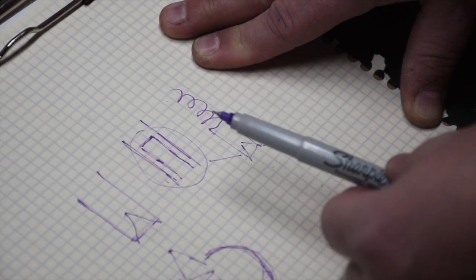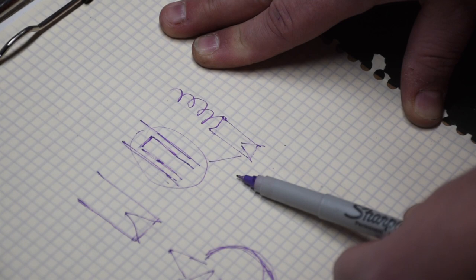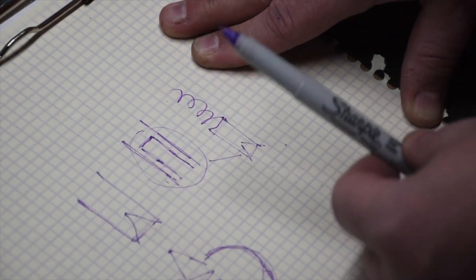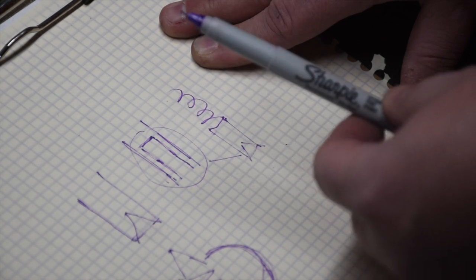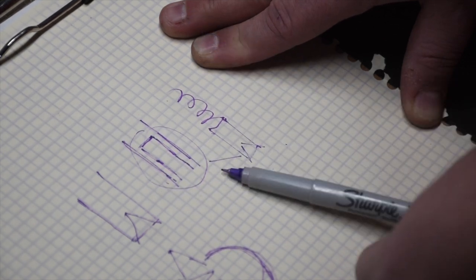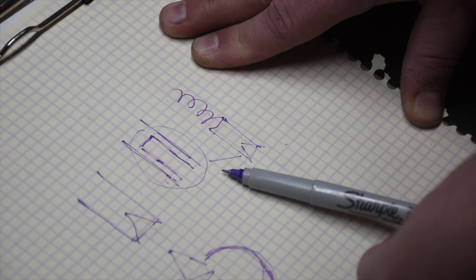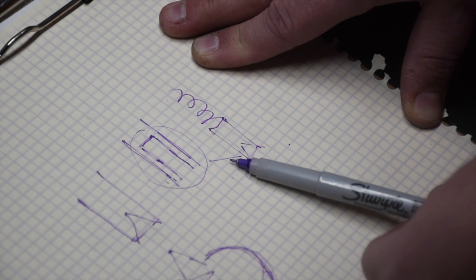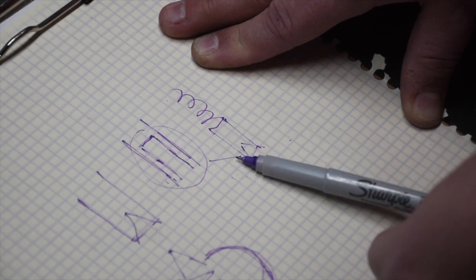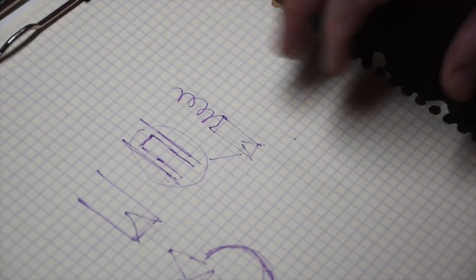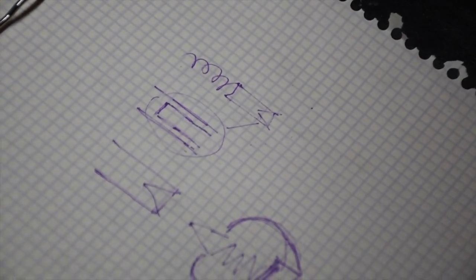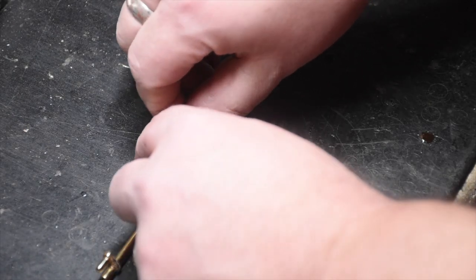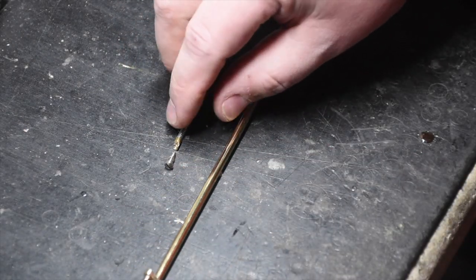No other major manufacturer of quality saxophones uses this crap. You don't see this on Yanagisawas, you don't see it on Yamahas, you don't see it on Keilwerths, you don't see it on Buffets. And it's not because it's patented and it's not because it's a super secret idea. It's a garbage idea and they really need to change it. So here's how I fix it.